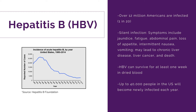Hepatitis B (HBV): Over 12 million Americans are infected — one in 20. It is often a silent infection. Symptoms include jaundice, fatigue, abdominal pain, loss of appetite, intermittent nausea, and vomiting, and it may lead to chronic liver disease, liver cancer, and death. HBV can survive for at least one week in dried blood. Up to 40,000 people in the U.S. will become newly infected each year.